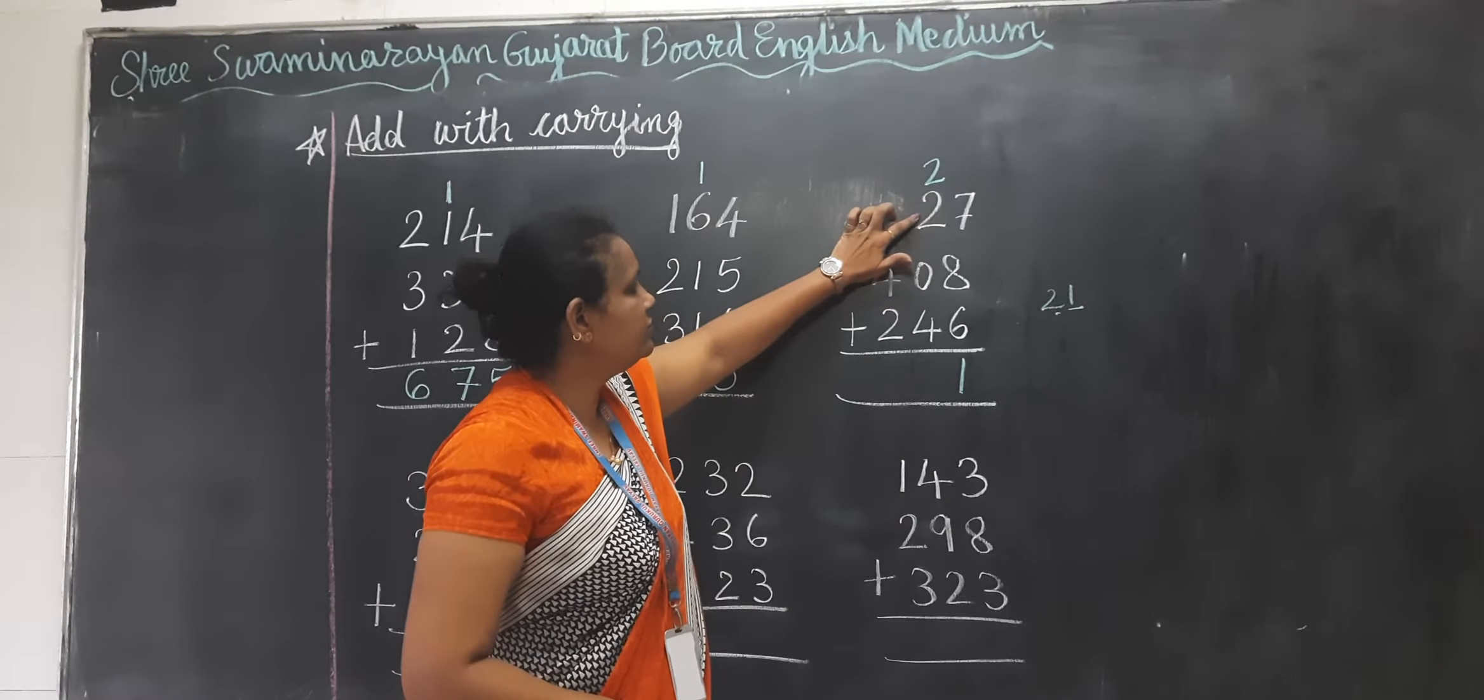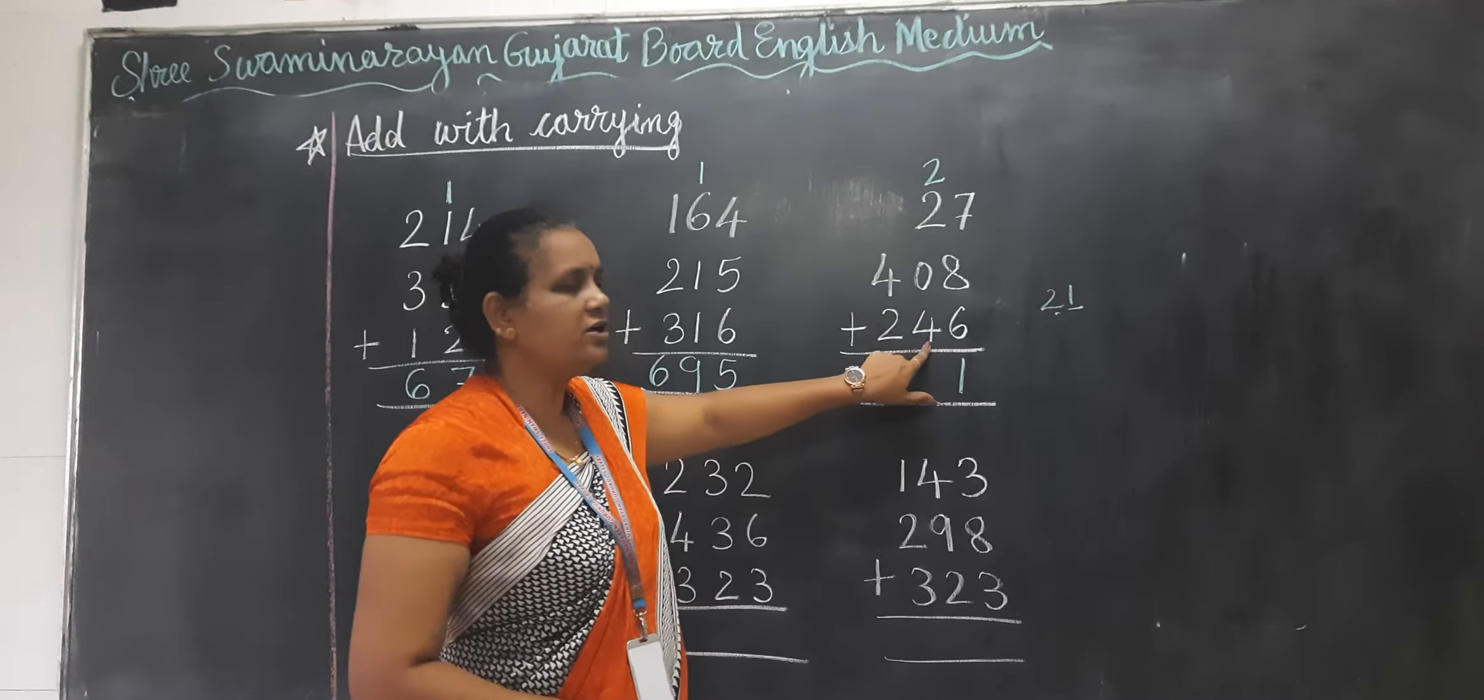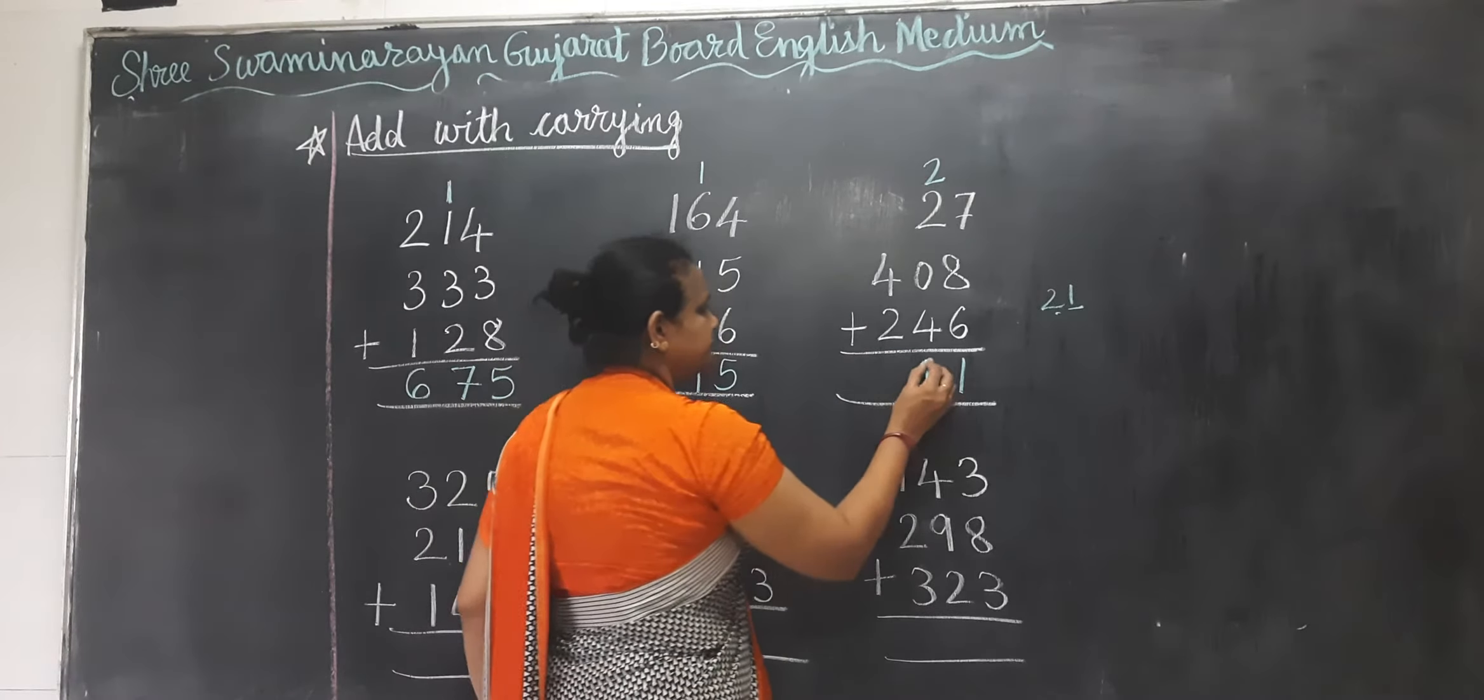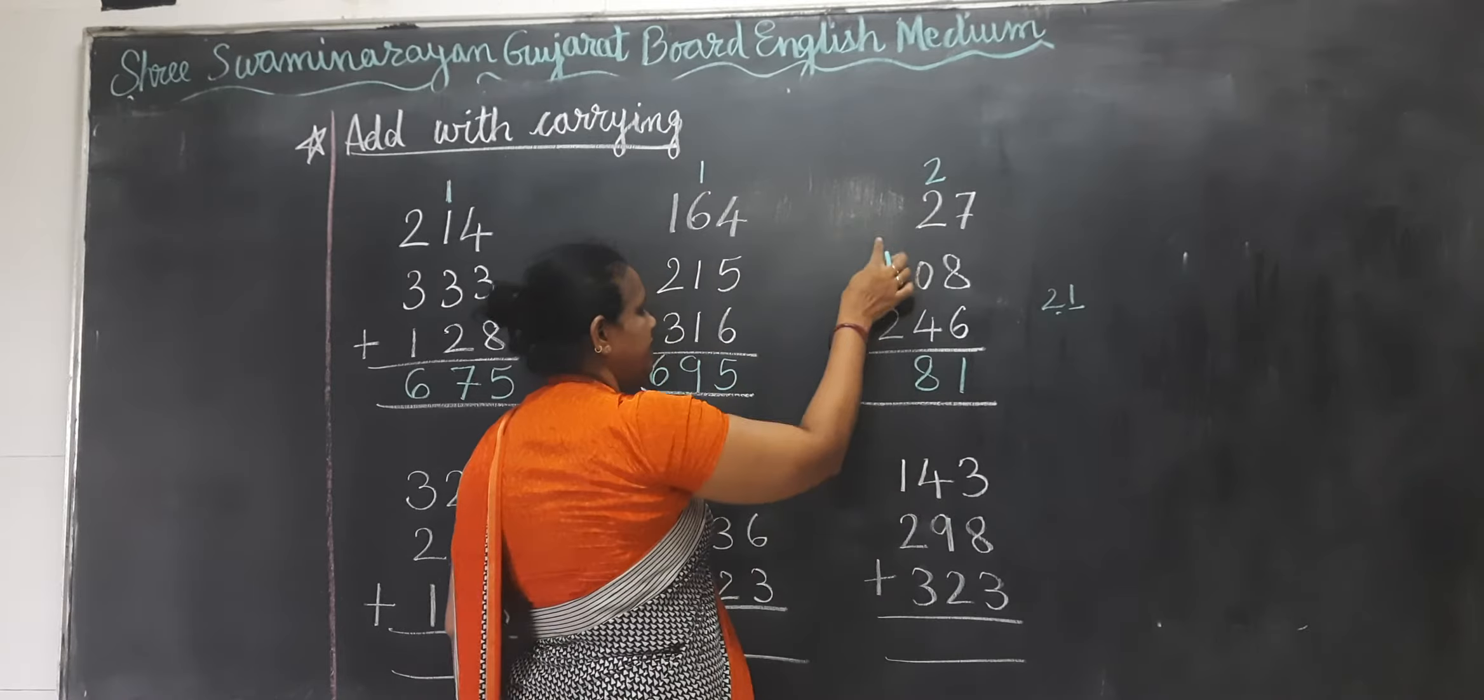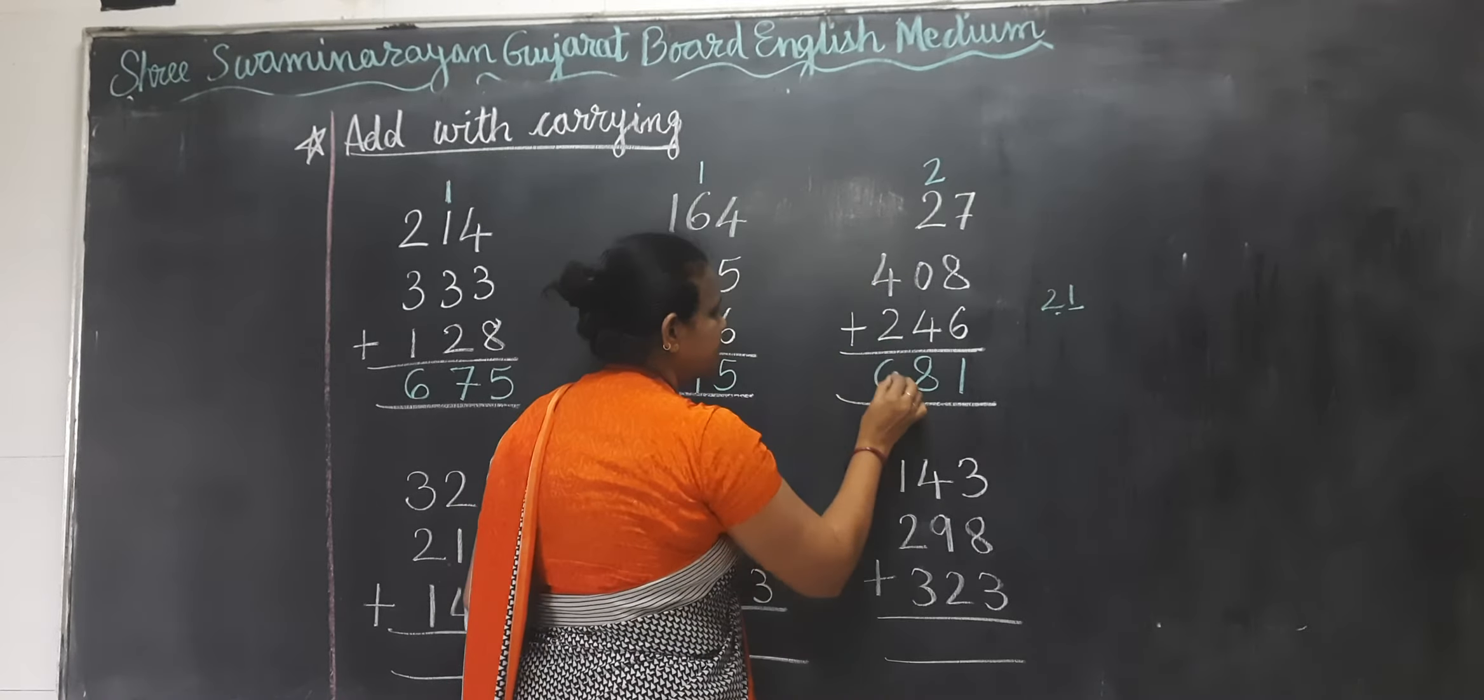2 plus 2 equals 4. 4 plus 0 equals 4. 4 plus 4 equals 8. Now here any number is there? No. So directly 4 plus 2 equals 6.